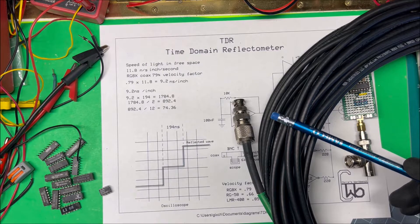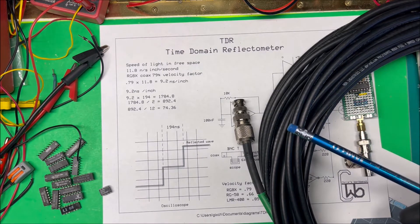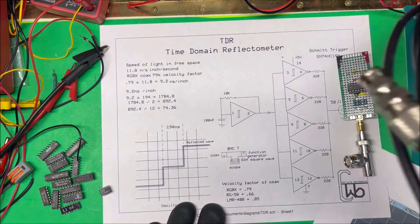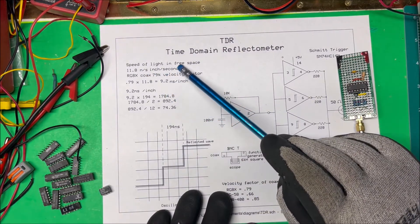Whether there's a short or open somewhere along the coax here. So in order to do that we're going to use this TDR and all that does is, we know the speed of light in free space is 11.8 nanoseconds per inch.